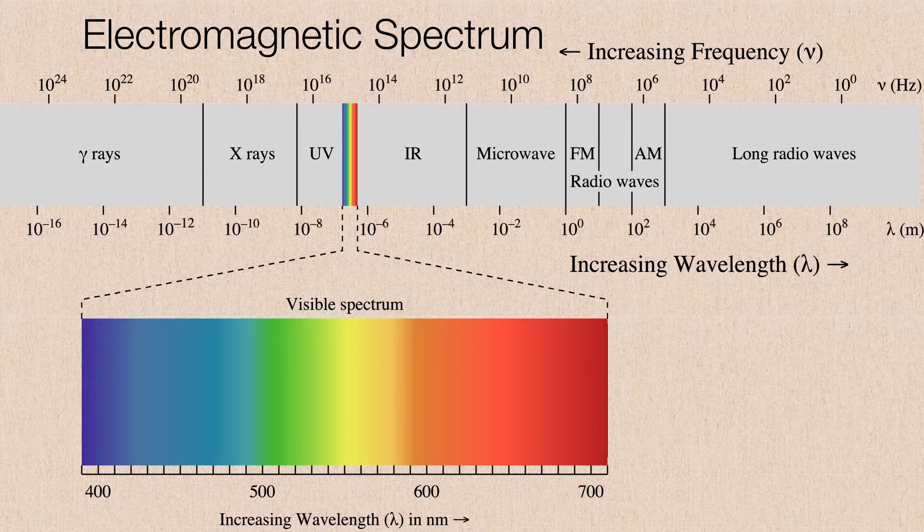We know, for example, let's take a look on the right-hand side, we know a little bit about radio waves. We switch on the radios, and part of the radio wave band is segmented into AM radio waves and FM radio waves.